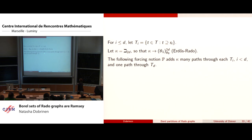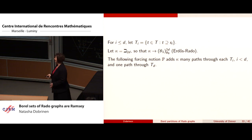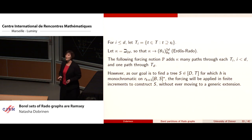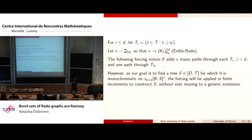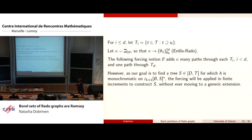If you actually used this forcing, you'd add κ-many branches through each tree, but we're not going to actually do that because it won't do what you want anyway. Our goal is to find some tree end-extending D for which H is monochromatic, applying it in finite increments without ever moving to a generic extension. This is the lovely heart of Harrington's idea.